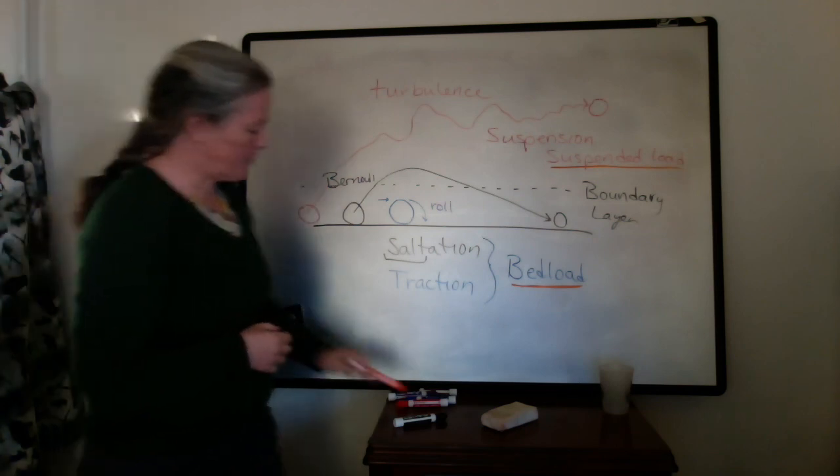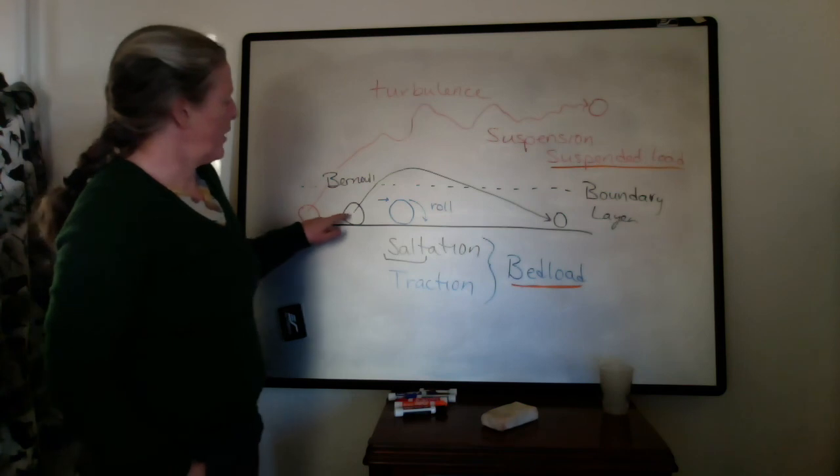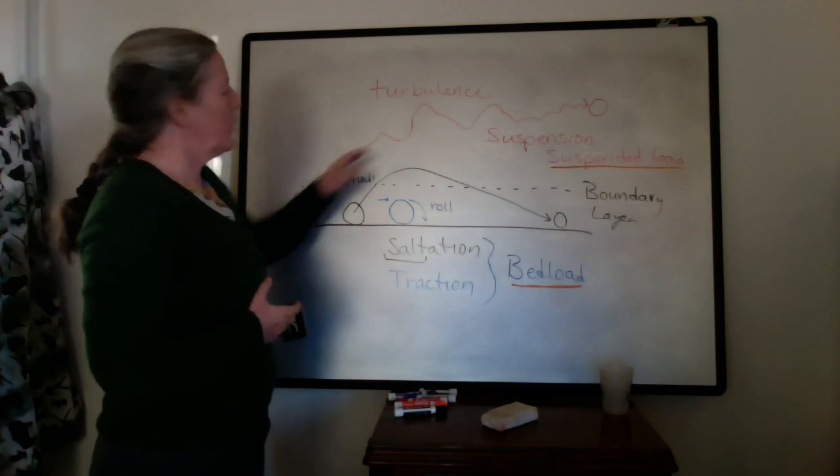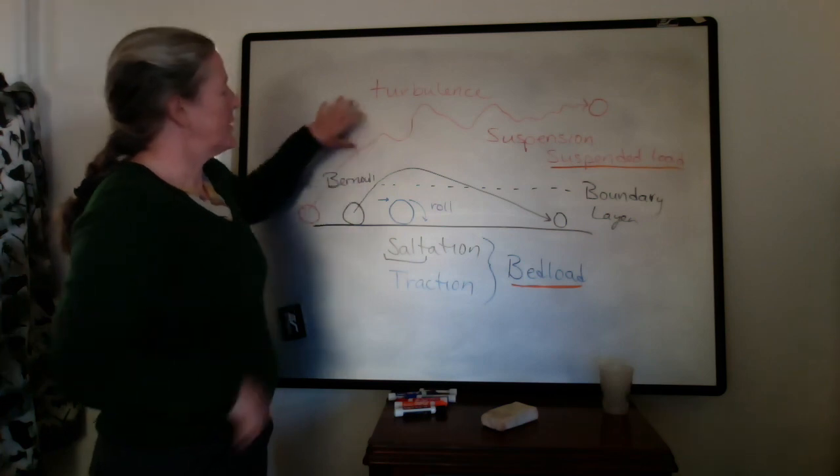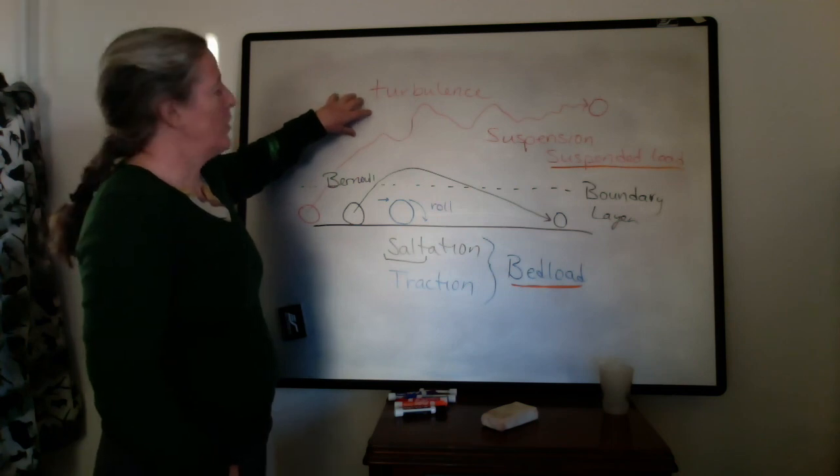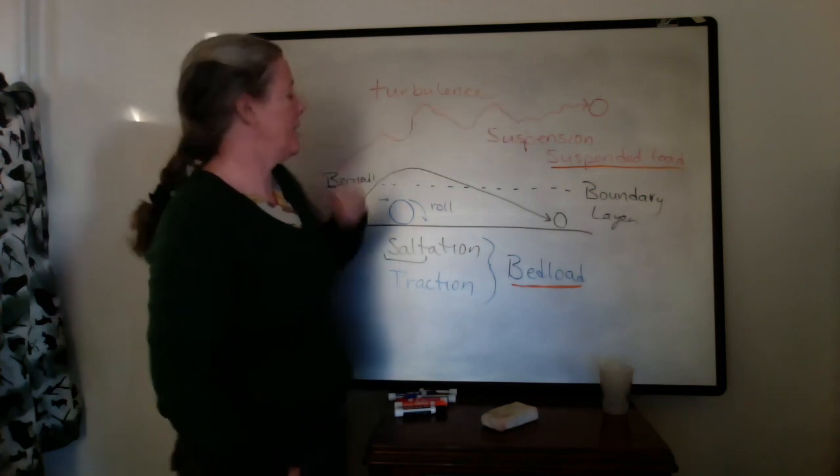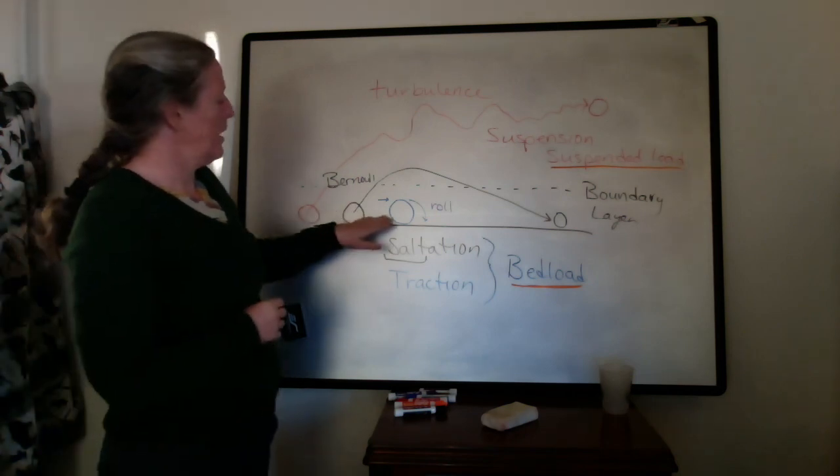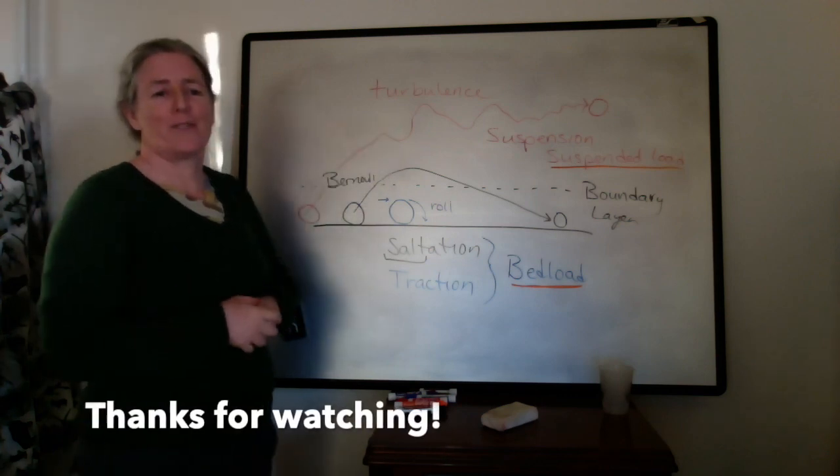So these two types of transport have pretty different implications for sediment. The grains that are in bed load can get caught in irregularities in the bottom of the flow, whereas the suspension load can get transported further out. As the flow speed slows down, we know from the Reynolds number, the turbulence goes down. And so as the turbulence goes down, the effect of gravity on the suspended particles increases and they do settle out. So there's a really nice relationship between the size and mass of grains and how they are transported within the fluids.